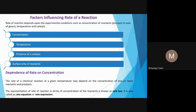The rate of a chemical reaction at a given temperature may depend on the concentration of one or more reactants or products. Sometimes, with respect to certain reactants — especially those in large excess — the rate of reaction does not change even if you add or remove a small amount, because they are not limiting reagents.